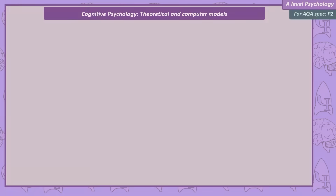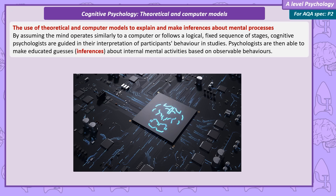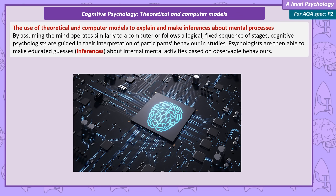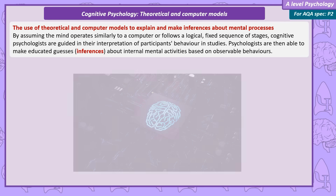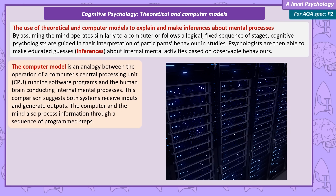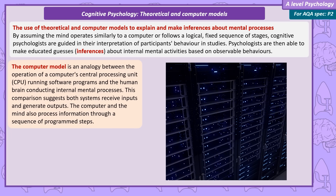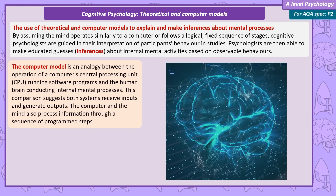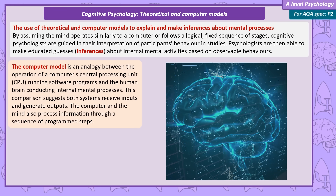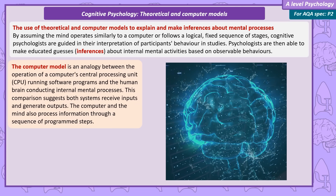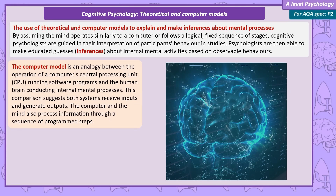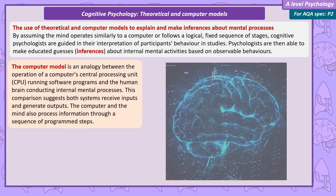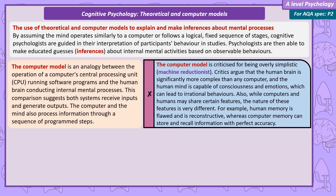Theoretical and computer models. To explain internal mental processes, cognitive psychologists rely on models. The computer model is how this video was introduced — asking you to think about the similarity between a computer's CPU running software programs and the biological brain running internal mental processes. Both systems have inputs and produce outputs, and both are assumed to process information in a series of program steps. However, the computer model of the mind is criticised as being overly simplistic — this criticism has a specific term: machine reductionism.